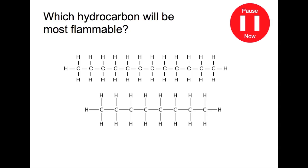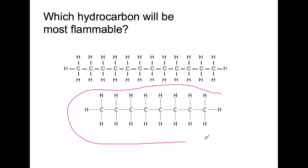Pause the video now and work out which hydrocarbon will be most flammable. Flammability is based on how volatile your compound is. The less carbons you have, the more volatile your compound is and therefore the more flammable it will be. This is a smaller hydrocarbon and therefore it will be more flammable.